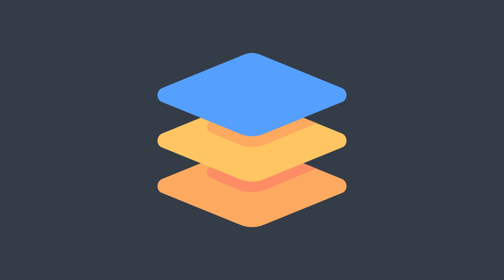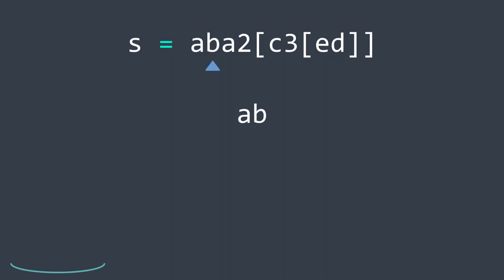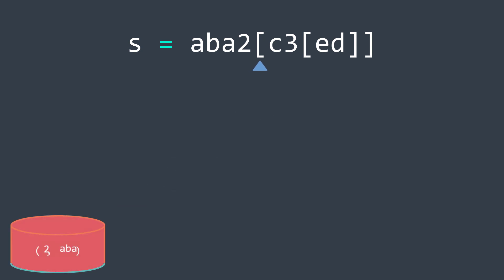Let's briefly talk about why a stack and not another data structure. When decoding a string, we read characters and find an integer, meaning we need to multiply it by the expression that comes after it — but we haven't decoded it yet. So we store the part decoded so far and the integer in a stack, such that when we finish decoding the inner expression, we pop them back and multiply.